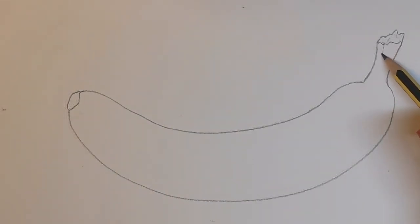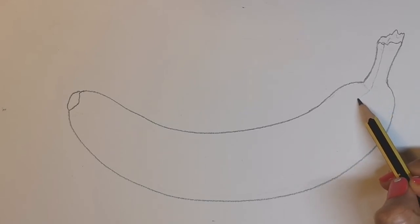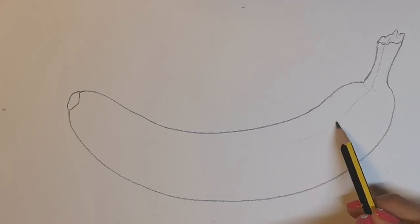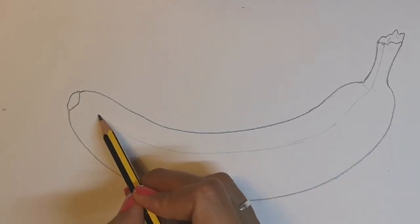A little way along the stalk, draw a faint line down and curve, following the top outside line of the banana.